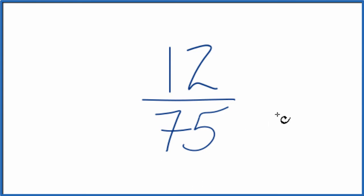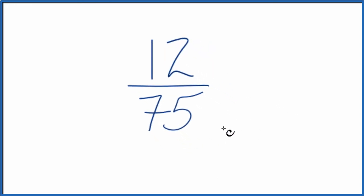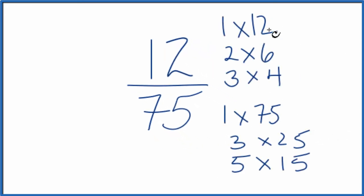To do that, we need to find a common factor, something that goes into 12 and 75. So these are the factors for 12 and 75. When we look at the factors for 12 and 75, it looks like 3 is going to be the greatest common factor.